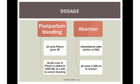For postpartum bleeding, 10 units of Pitocin is given intramuscularly, or 10 to 20 units of Pitocin is added to a 1,000 milliliter intravenous solution at a rate sufficient to control bleeding. In an inevitable or incomplete abortion, oxytocin is usually administered after suction or D&C — patients are given 10 units of Pitocin in 500 milliliters of intravenous solution.